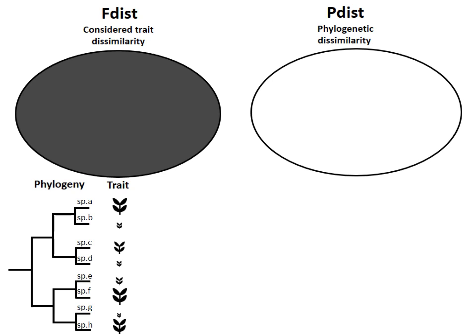Now, consider that we do not have only information about trait dissimilarity between species, but also how distant they are phylogenetically. These two sources of ecological dissimilarity — functional and phylogenetic — can be completely independent from each other, with evolutionarily related species being as functionally different as unrelated species, as shown in the example here. Thus, the two oval shapes, functional and phylogenetic dissimilarities, do not overlap as they bring different information.